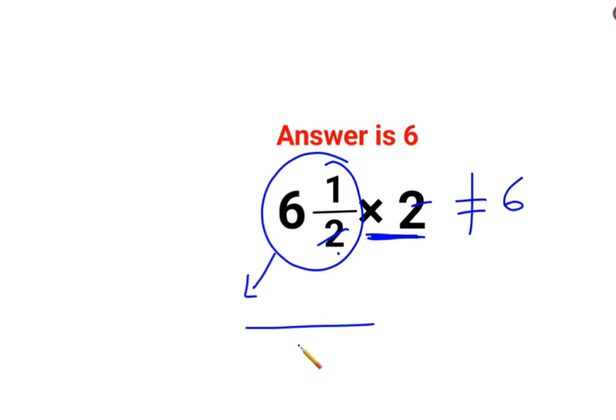The 2 continues to remain as your denominator. But in your numerator, what happens is 6 gets multiplied with the denominator which is 2, and this product gets added to the numerator.